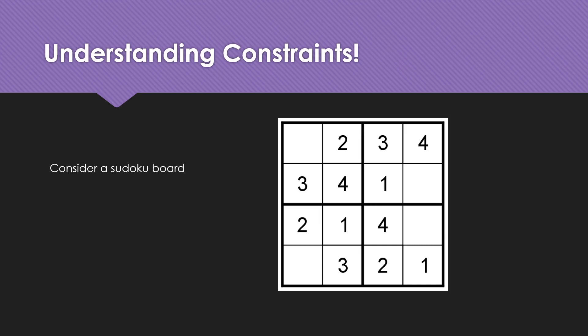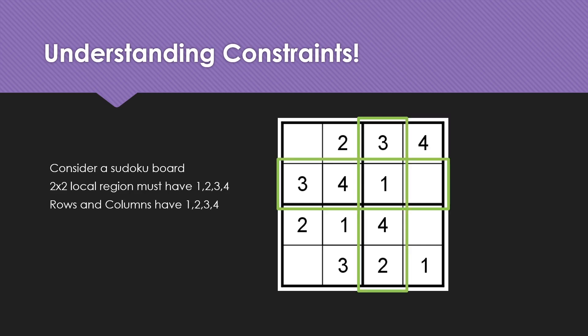To understand the constraints used by wave function collapse, let us consider a Sudoku board. In a Sudoku board, the constraints are that in a 2x2 sub-region highlighted by thick borders, all cells must have the numbers 1, 2, 3 and 4. This constraint is also true for all rows and columns. Using these constraints, we are easily able to solve this Sudoku board.